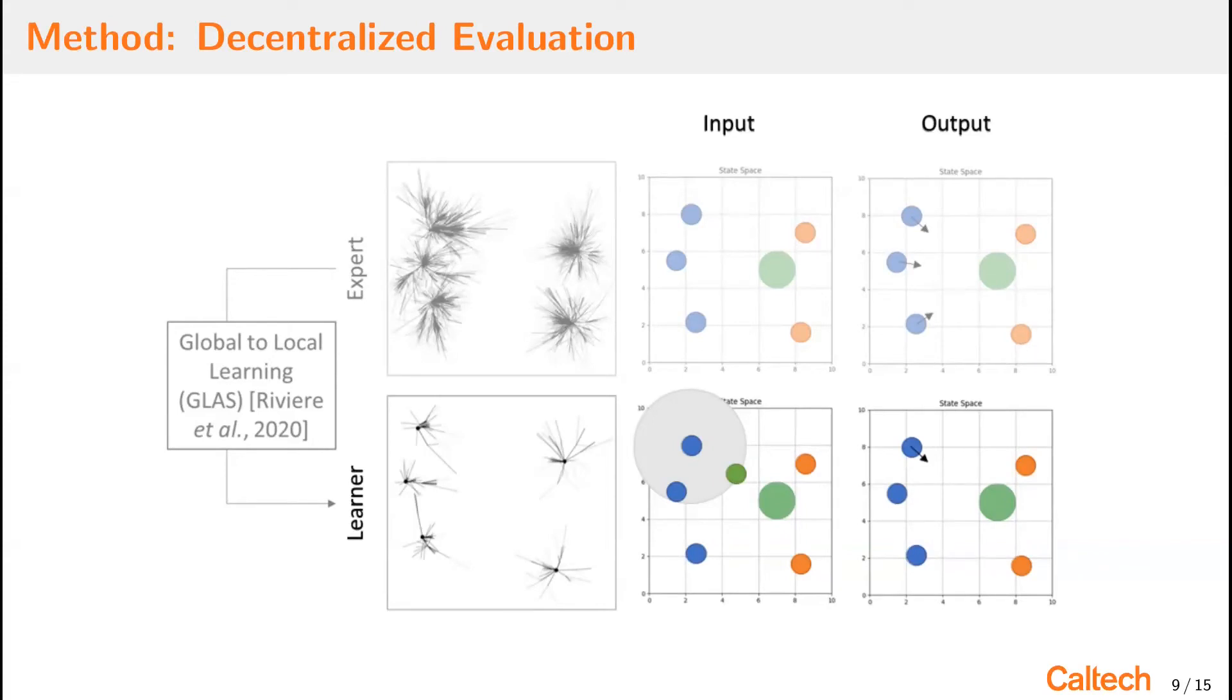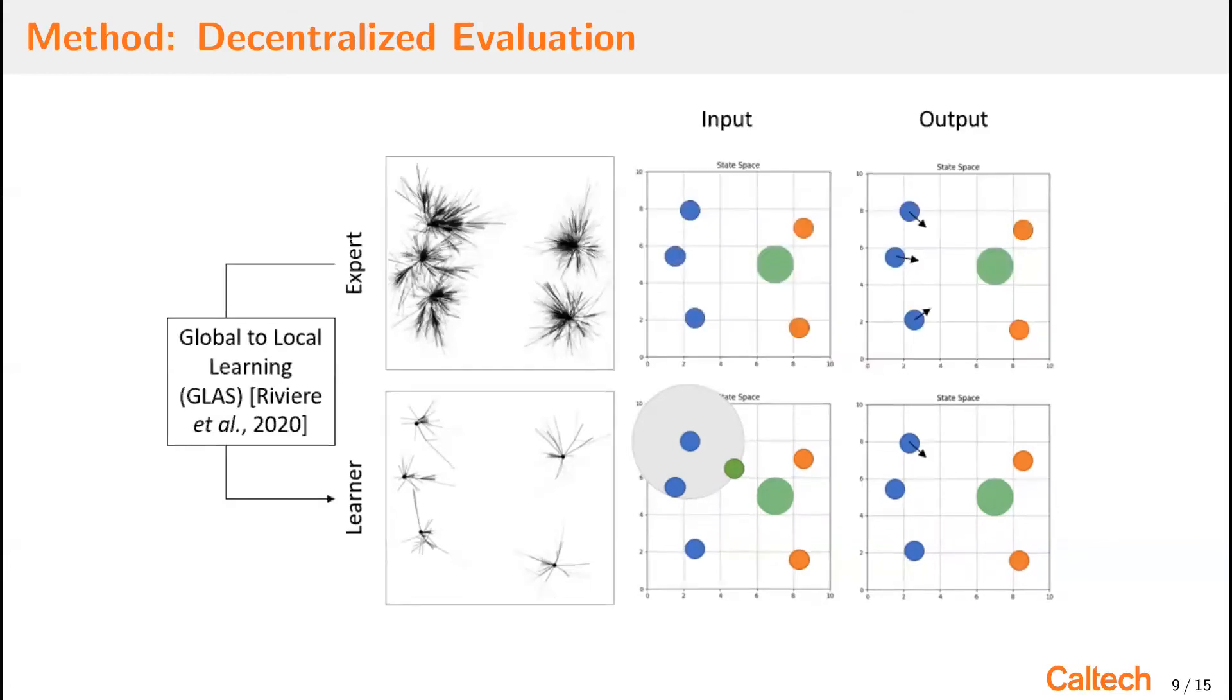At this point, we have to figure out how to synthesize a decentralized policy, whereas the optimality is well defined in the centralized case. In order to do this, we use a global to local learning strategy. This is a strategy that was introduced in our previous work. And the key idea is we ask the composition of learners to best imitate the centralized expert.